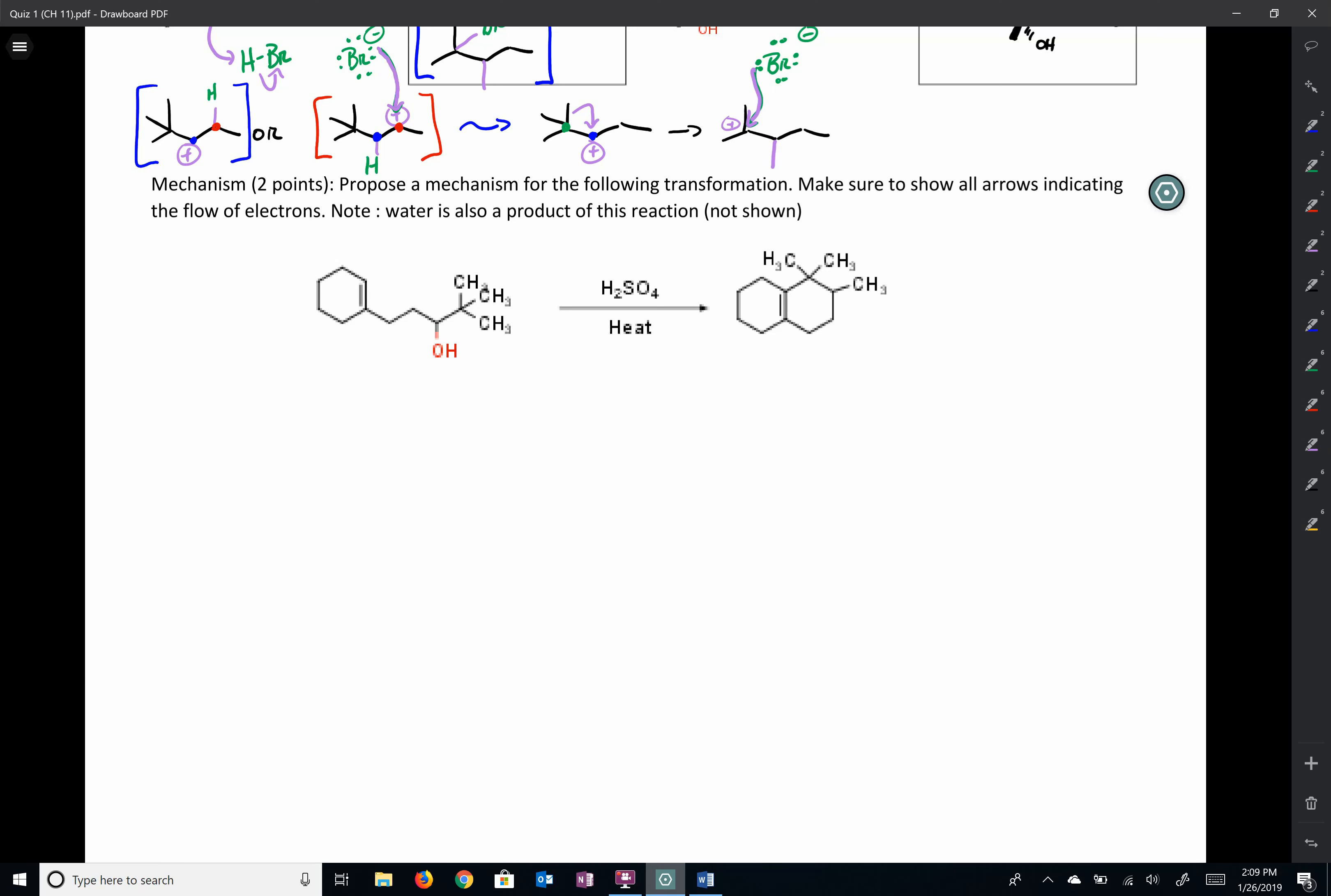All right. We are going to go through the mechanism part for quiz 1 from chapter 11 for Organic Chemistry 2 for the spring 2019 semester. And it asks us to propose a mechanism for the following transformation. So we're taking an alcohol, we have a double bond, we got some sulfuric acid present, and so it's asking us to propose a mechanism to get from one end to the other here.